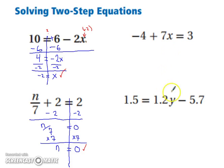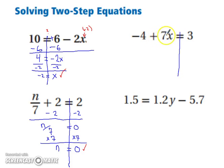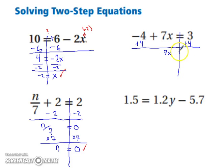Take a moment and pause the video and try the two on the right. Now let's try them together. We draw our line, and we need to undo addition or subtraction. The seven is not the one being added or subtracted to x, so we're going to undo the other operation first — add four to both sides of the equation, since adding four is the inverse of minus four. That leaves us with seven x on the left and seven on the right. X is still not by itself, so we divide both sides by seven.